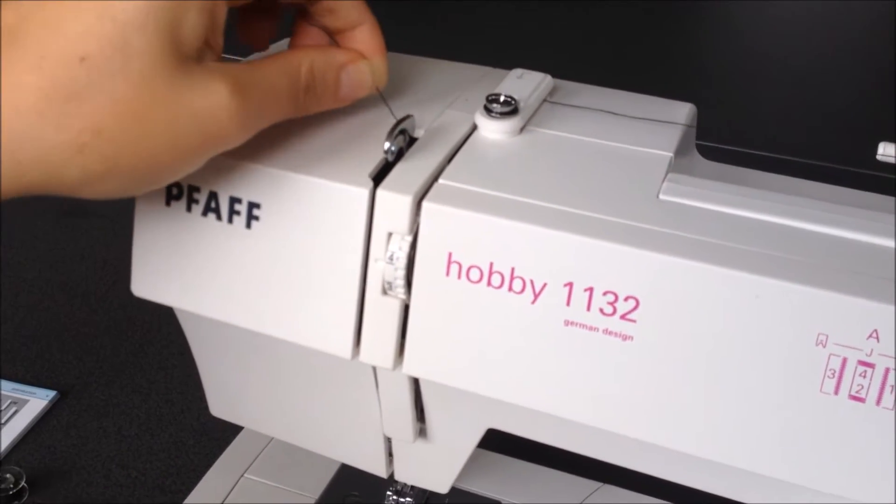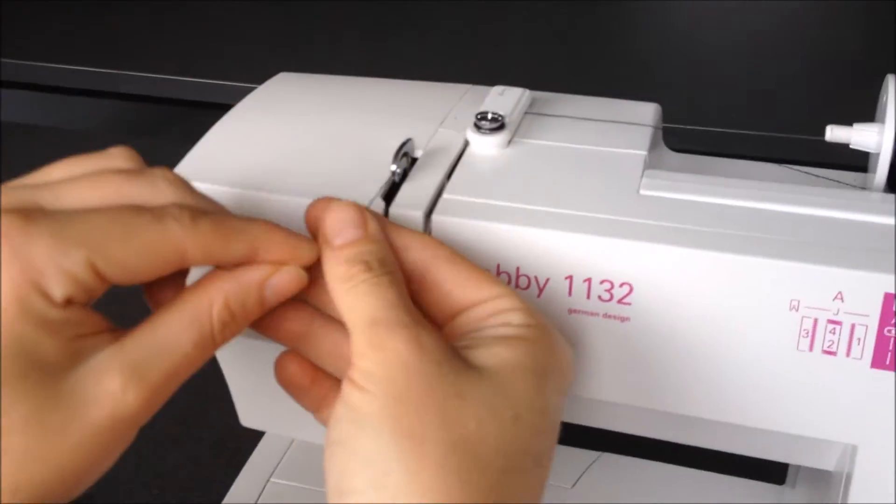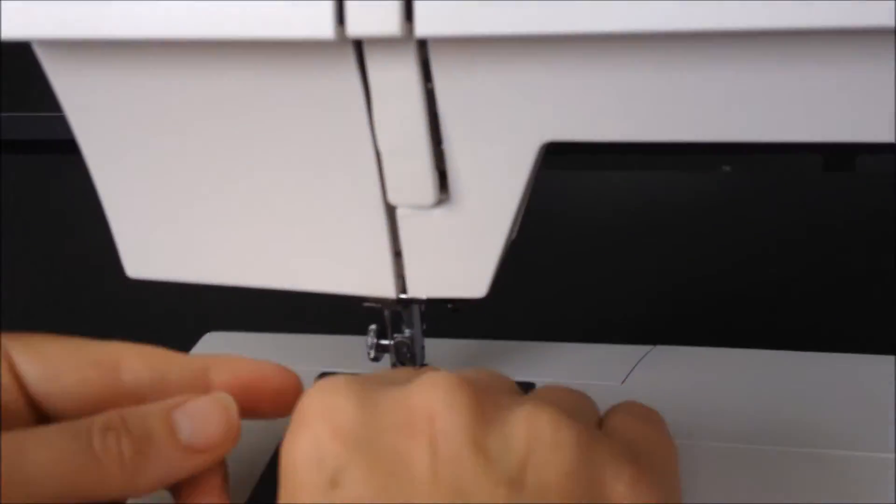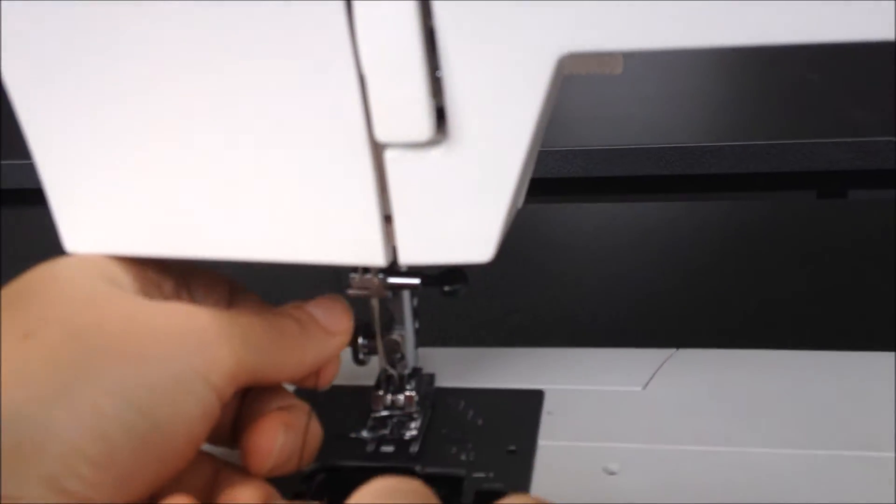You go behind the take-up lever and it will stick in place. You're following down the line of the machine, clip behind the metal clip and then thread your needle.